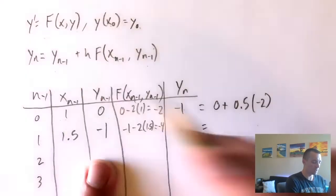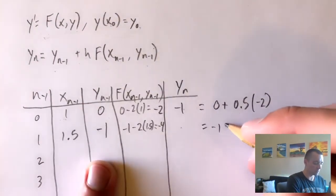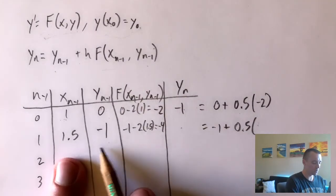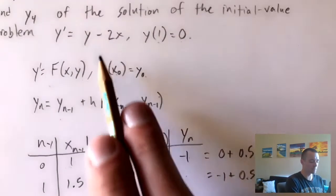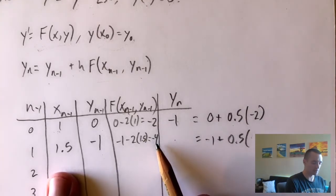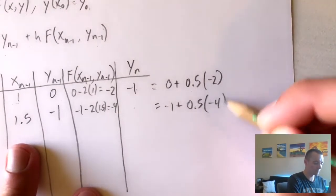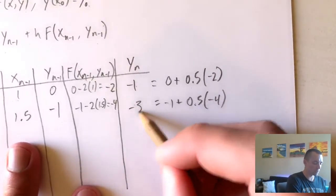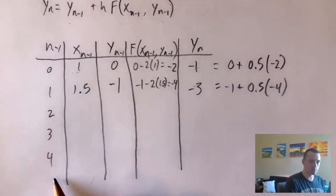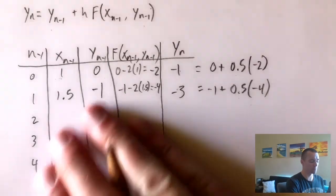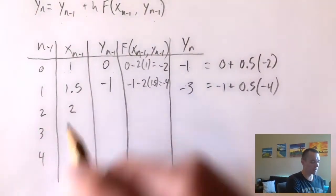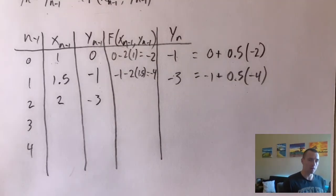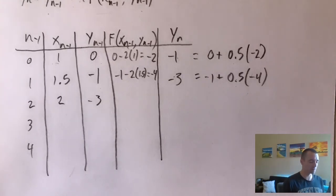Again we plug into the formula: y₂ = −1 + 0.5 × (−4) = −1 − 2 = −3. We keep doing that process — taking the previous y value, computing the next x, evaluating f, then applying the formula — until we reach n = 4. I'm going to speed up the video a little bit since this gets repetitive so you can see the final answers.